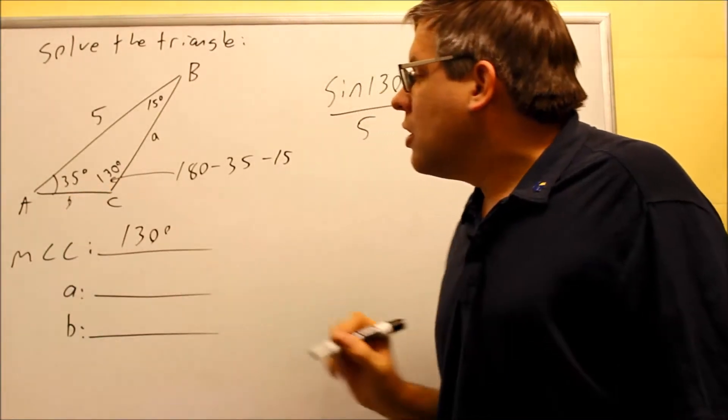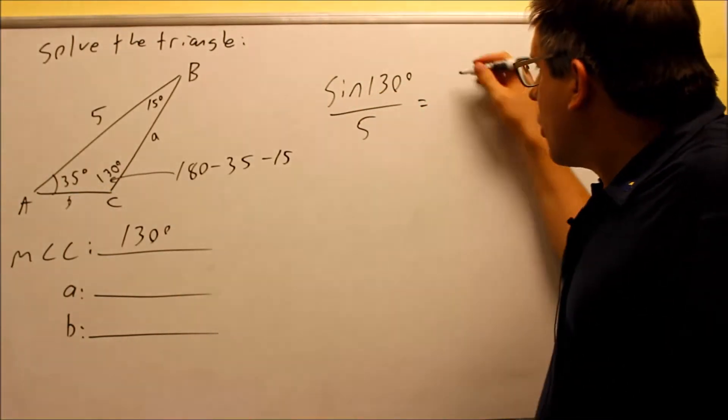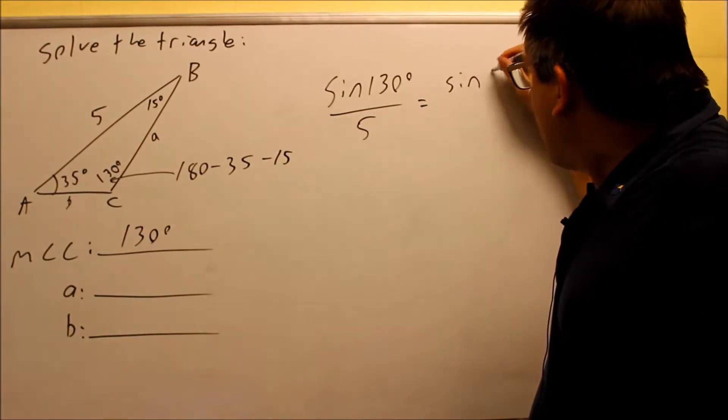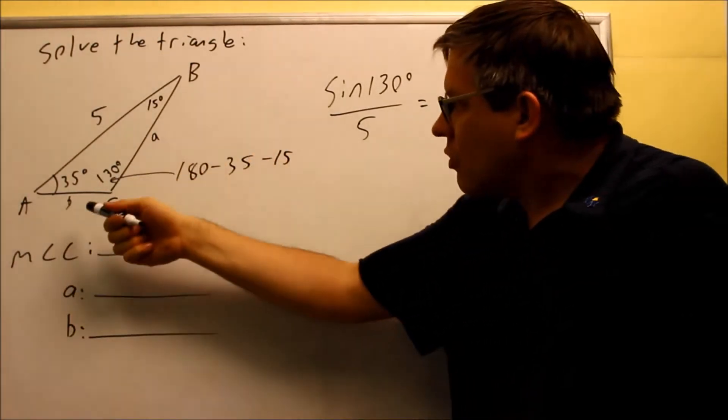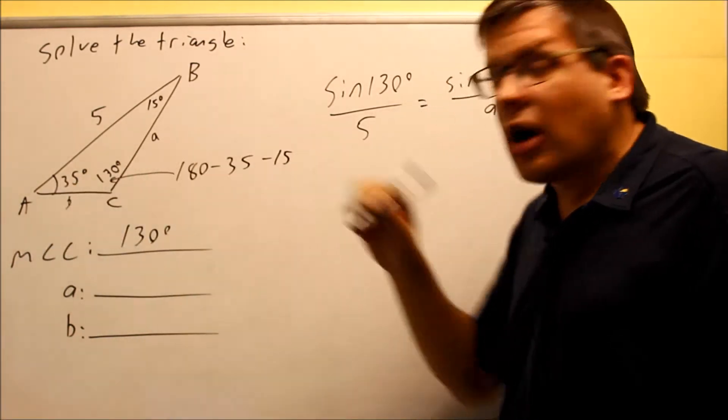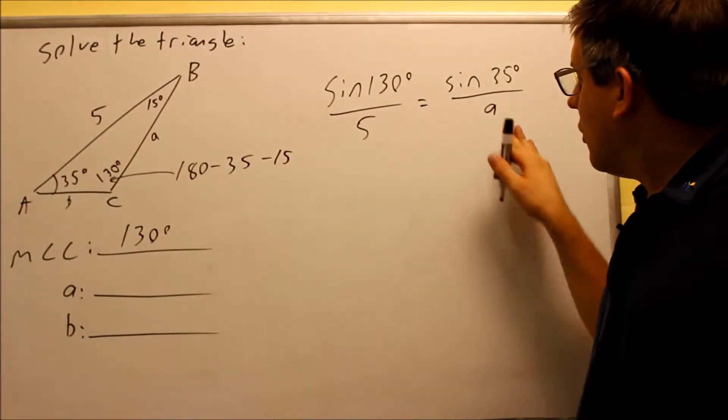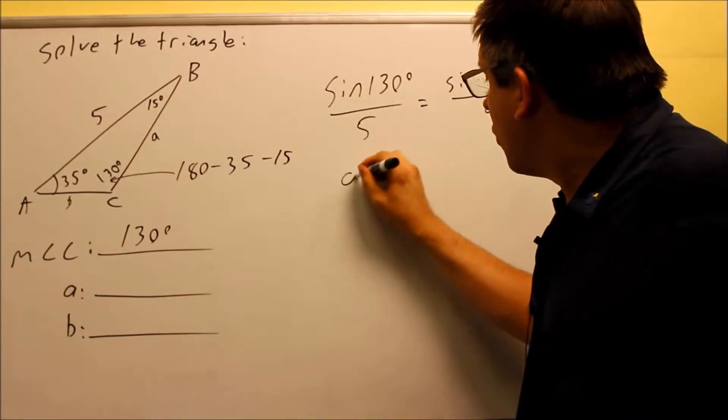And this is going to be the lowercase b right there. So we're going to do sine of 35 degrees over A. We're going to use that one because that's the angle across from the side we're trying to solve for. Now that we have this, we're going to cross multiply once again and solve for it.